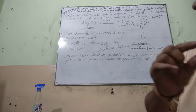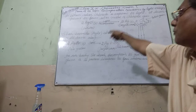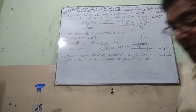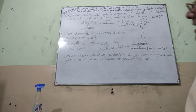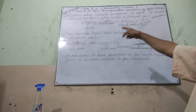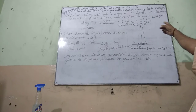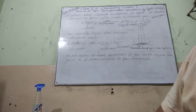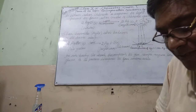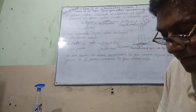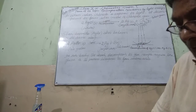Silver bromide is a pale yellow colored solid. When light causes this decomposition reaction, silver metal and bromine gas — which is red-brown in color — are produced. In this reaction the pale yellow color of silver bromide changes to greyish white due to the formation of silver metal. The decomposition of silver bromide is caused by light, which may be sunlight or bulb light.